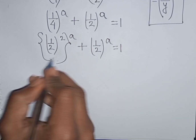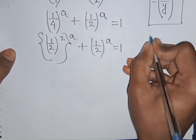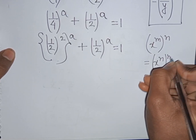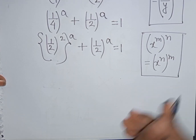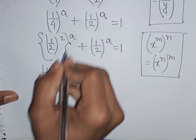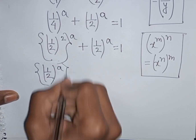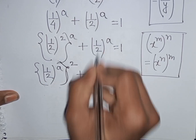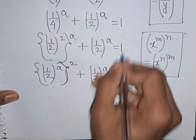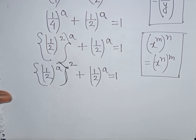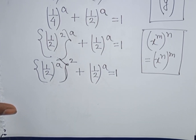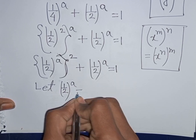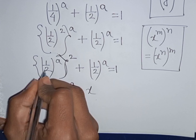Here we apply the exponential rule that (x^m)^n = x^(mn). So we can write (1/2)^a raised to the power of 2, plus (1/2)^a equals 1. We notice both terms contain (1/2)^a, so we substitute x = (1/2)^a.